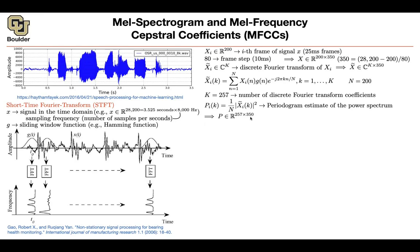P is now in R^{257 × 350}, because K was 257 and you have 350 frames. These numbers are in terms of frequency — specifically in hertz. And frequency is something mathematical. We would like to work with something that has a meaning or a scale relative to how the human ear operates.